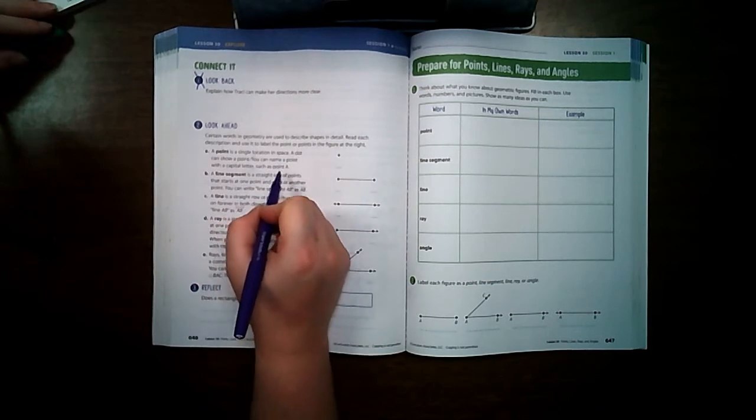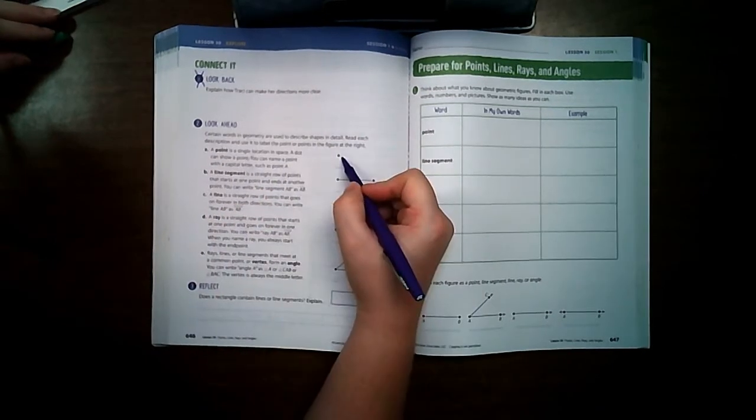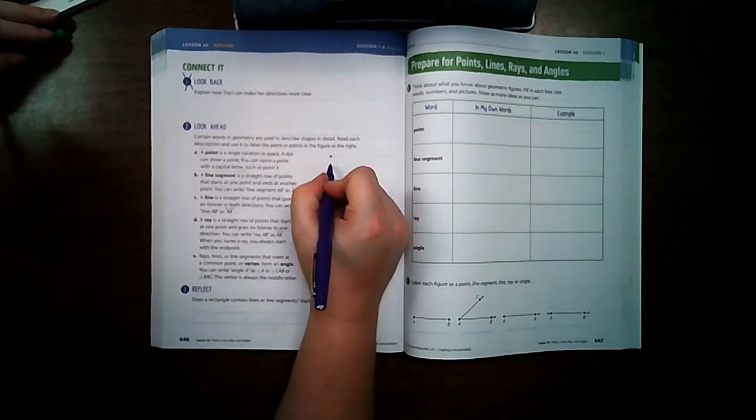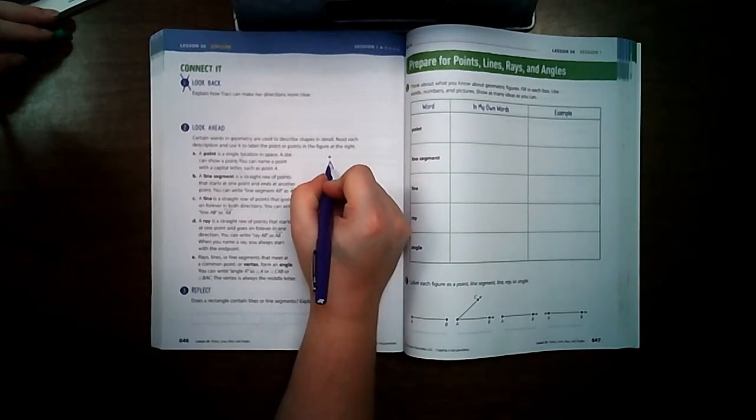A point is a single location in space. A dot can show a point. You can name a point with a capital letter, such as point A. This is what a point is, and to name it you would just give it a letter, so I'm going to give this one A, but it could have any name that you would like.